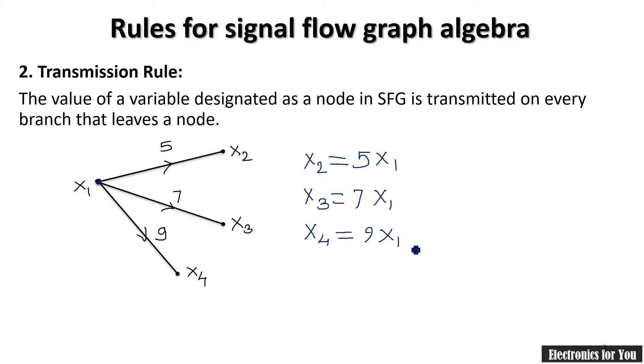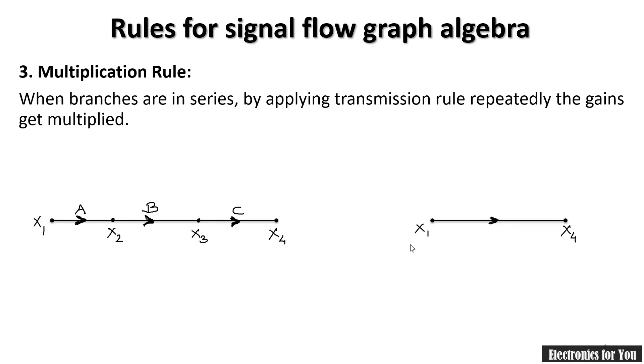The third rule is multiplication rule. Here if consecutive branches are there, means if the branches are in series, and if we apply transmission rules, definitely we have to apply it multiple times. Therefore this diagram will be equivalent to, as we are moving from x1 to x4, the resultant gain is multiplication of the individual gains.